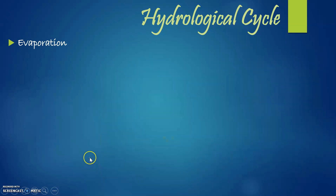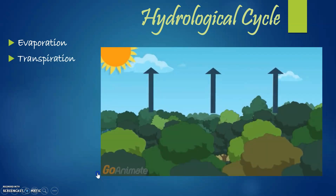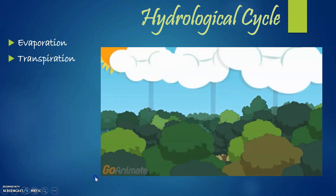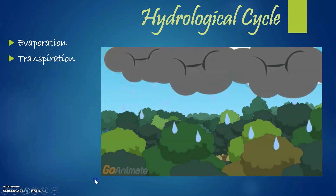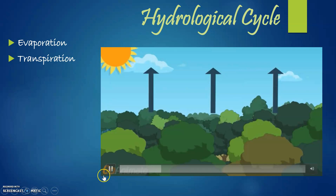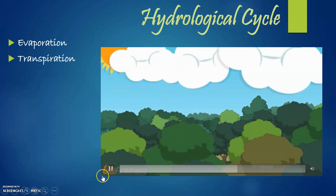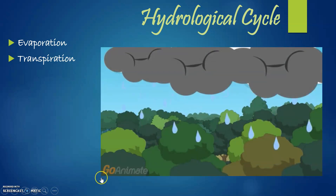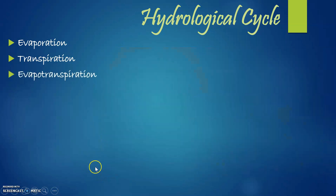The second feature is transpiration — when water evaporates from leaves, stems, flowers, or plants rather than from a water body. The process is the same but it is called transpiration. Plants basically lose more than 90% of their water through transpiration. The third feature is evapotranspiration, which is the combination of both evaporation and transpiration — whenever there is evaporation from both water bodies and plants, it is collectively called evapotranspiration.